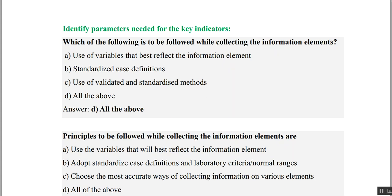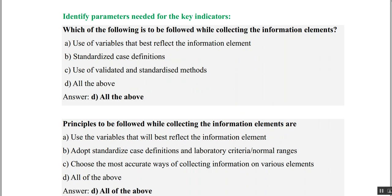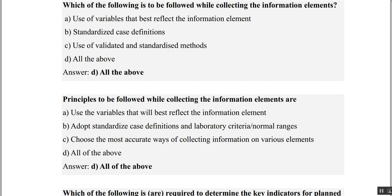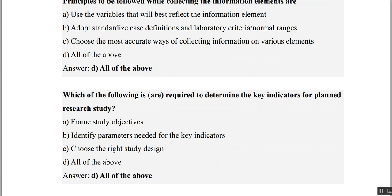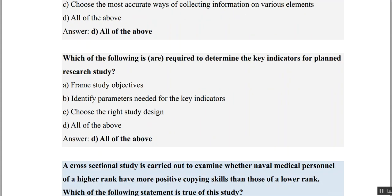Principles to be followed when collecting information elements: use variables that best reflect the information element, use standardized case definitions, and use validated and standardized methods — all of the above are needed. To determine key indicators for a planned research study, you must frame the study objective, identify key parameters, and choose the right study design — again, all of the above are required.